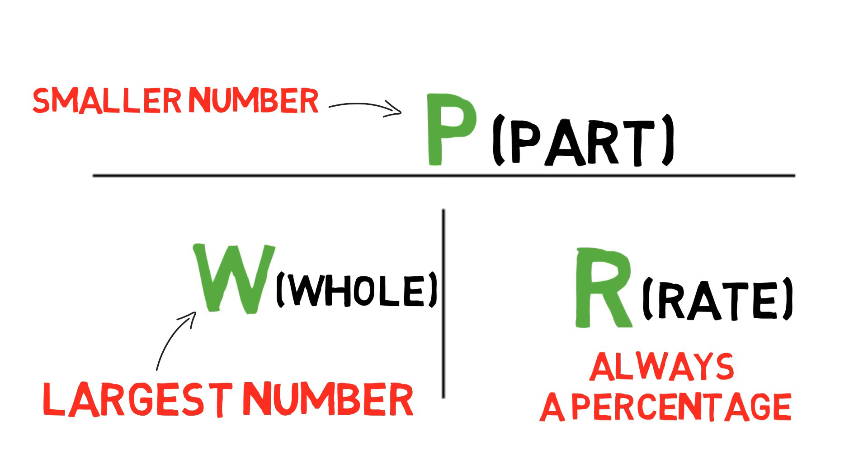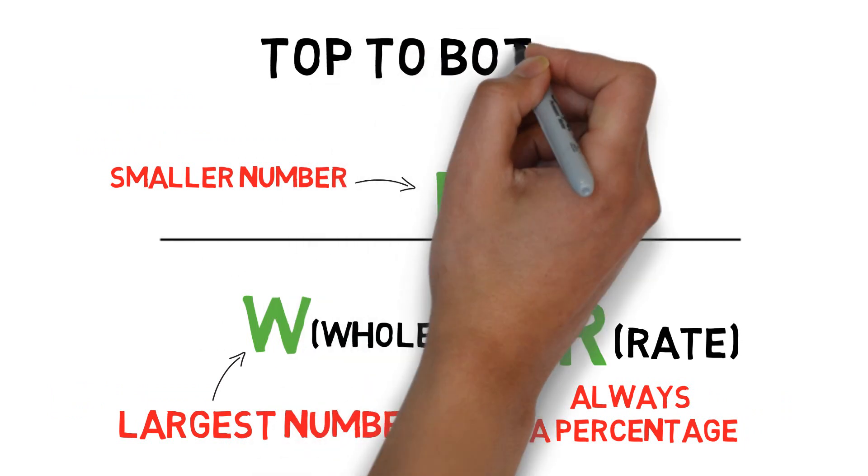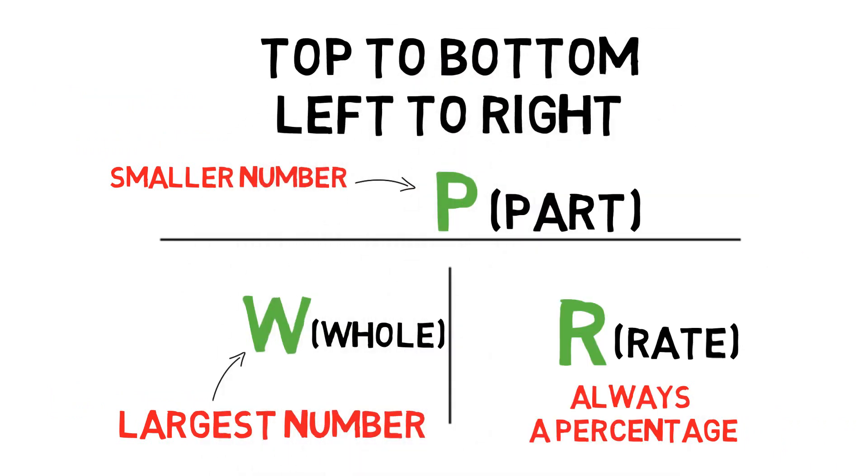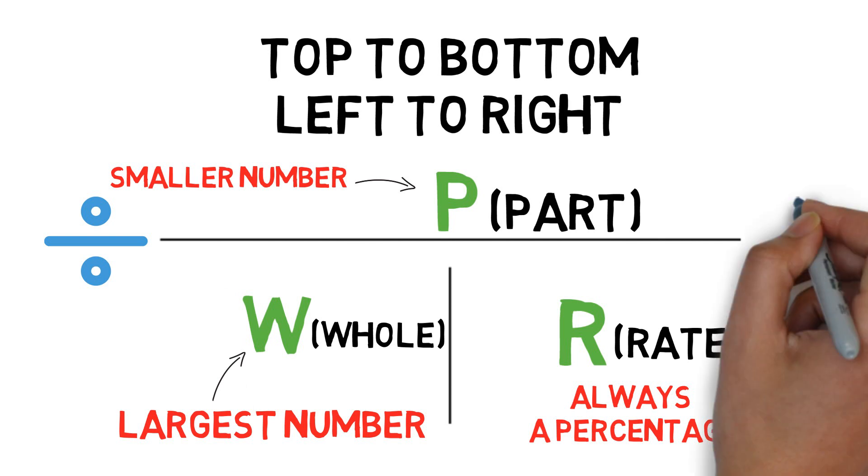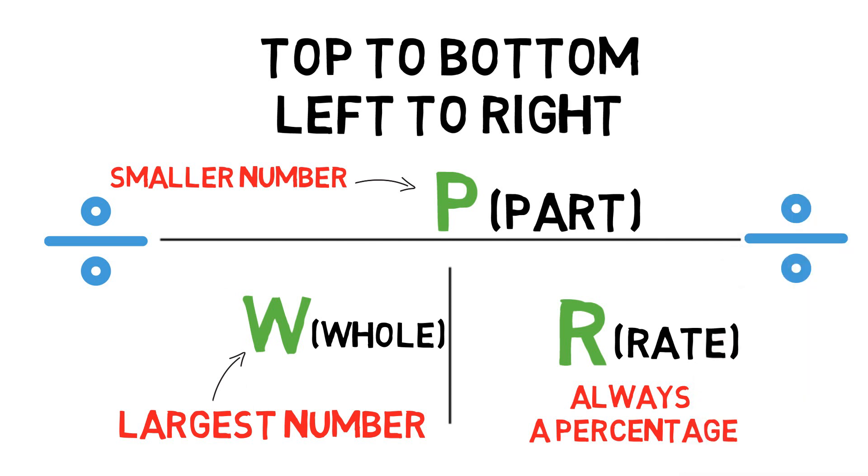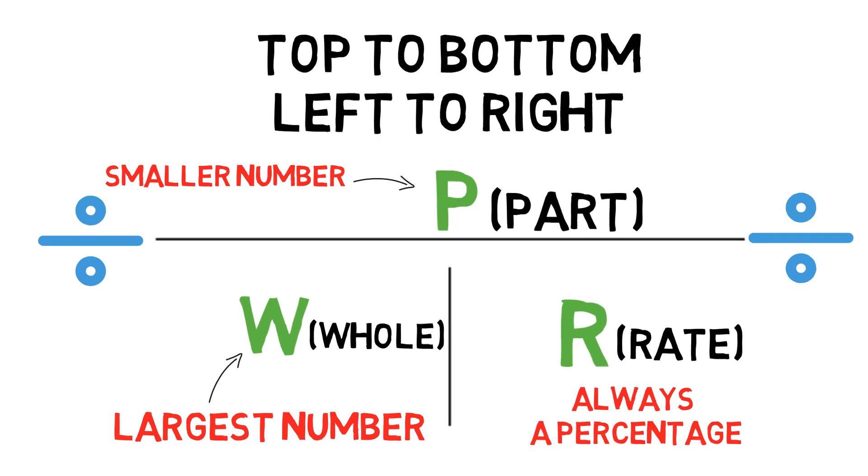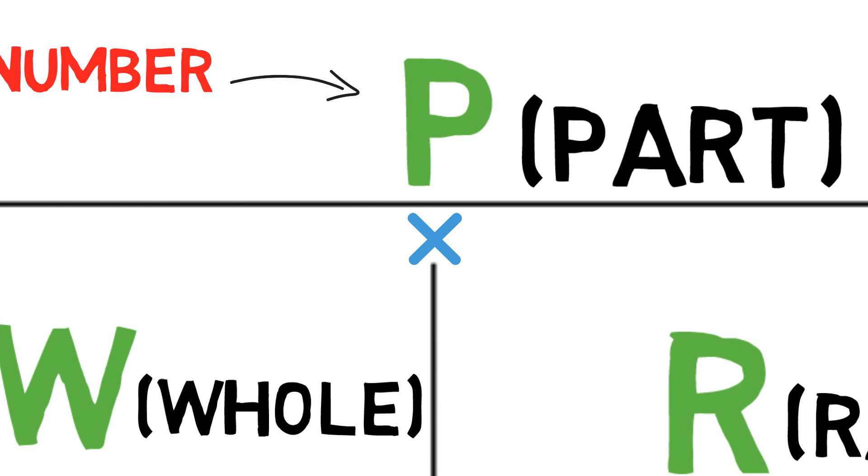With the power principle, or the T formula, we always work top to bottom and left to right. When we go top to bottom, we always divide. Think of that horizontal line as a great big divided by sign. So it is always the top number divided by one of the bottom two numbers. Likewise, when we go left to right, we multiply straight across. Notice our vertical line has a multiplication sign.